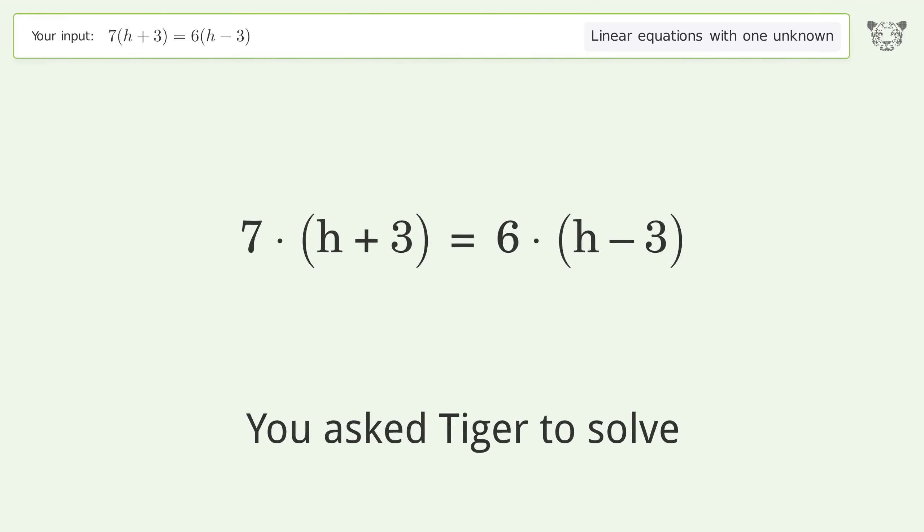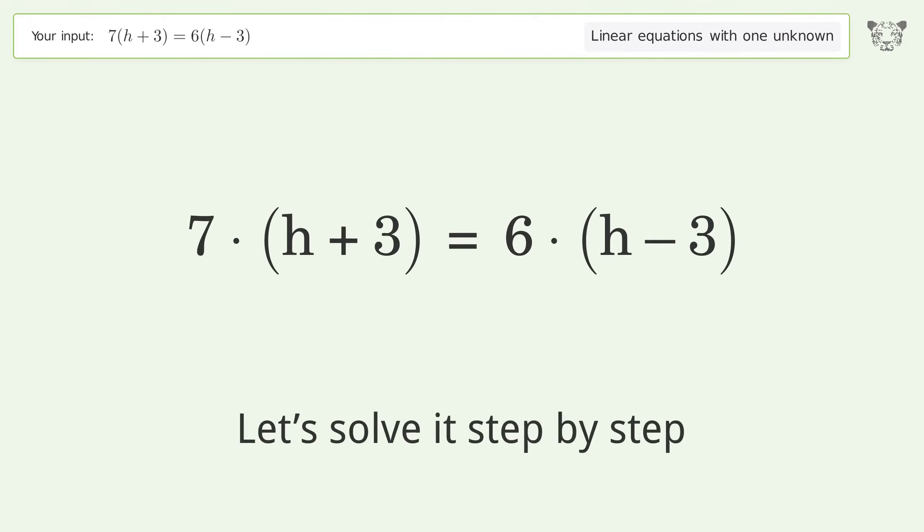You asked Tiger to solve this. This deals with linear equations with one unknown. The final result is h equals negative 39. Let's solve it step by step. Simplify the expression.